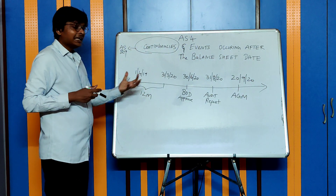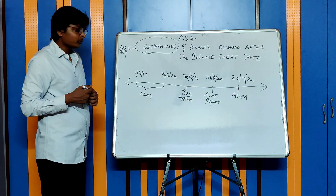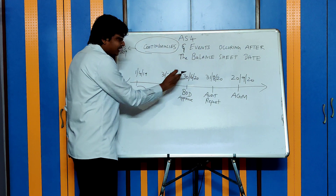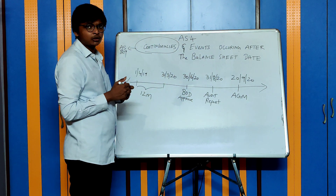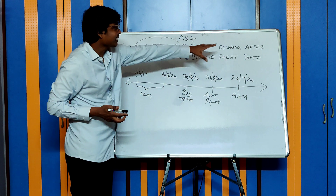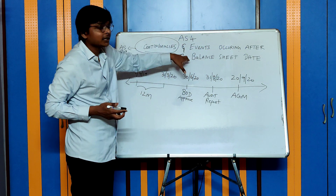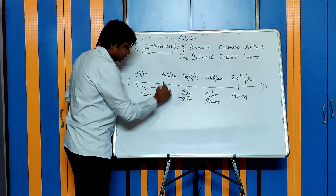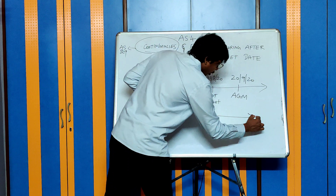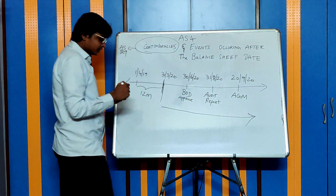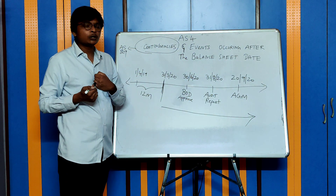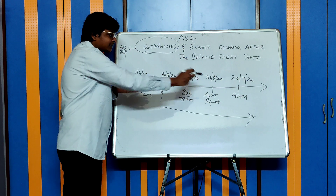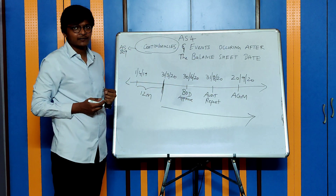Now, let us assume there are some events which happened after 31st March 2020 — events occurring after the balance sheet date. So what is the balance sheet date? After this, all the events which occur — what should I do as per AS4, and what is the timeline that I have to cover?